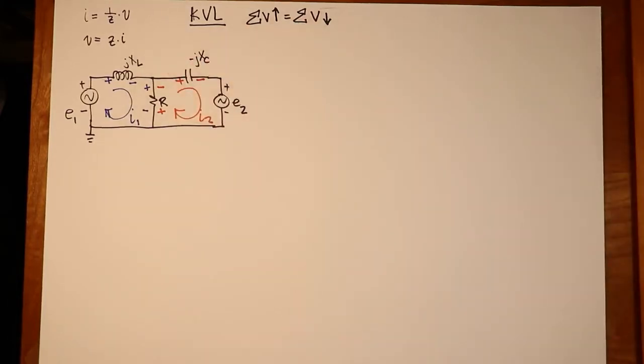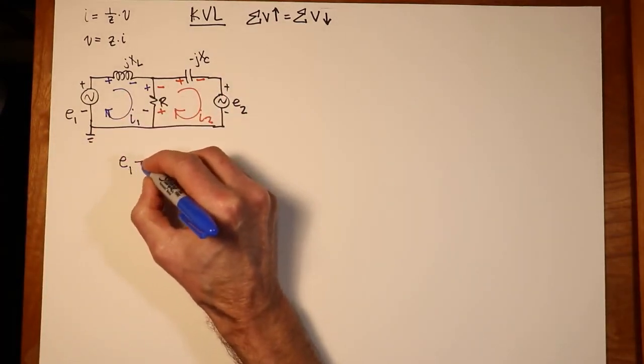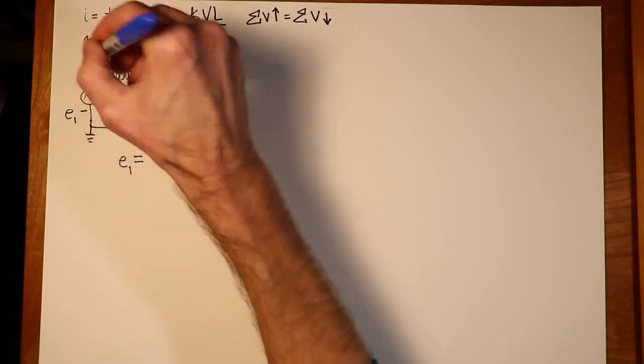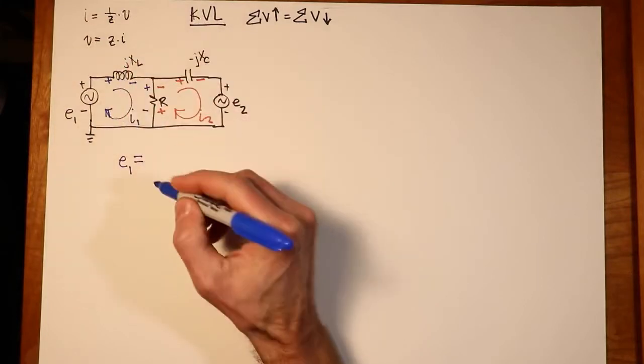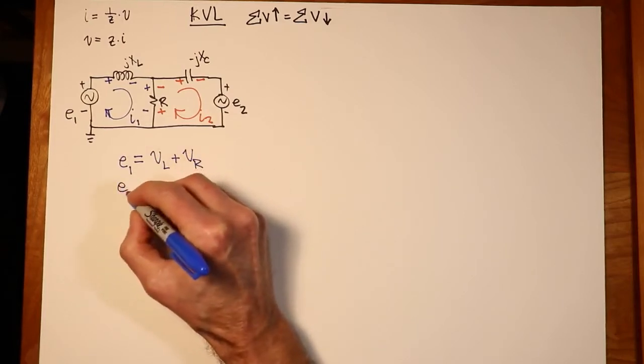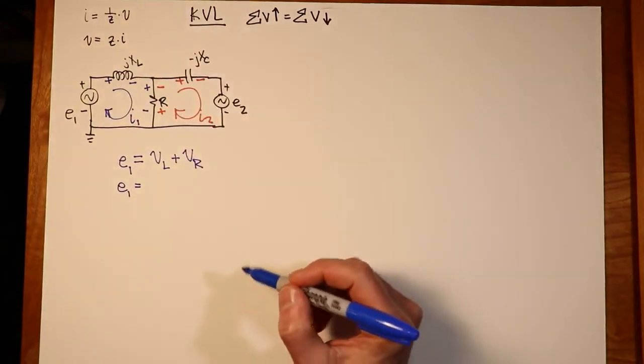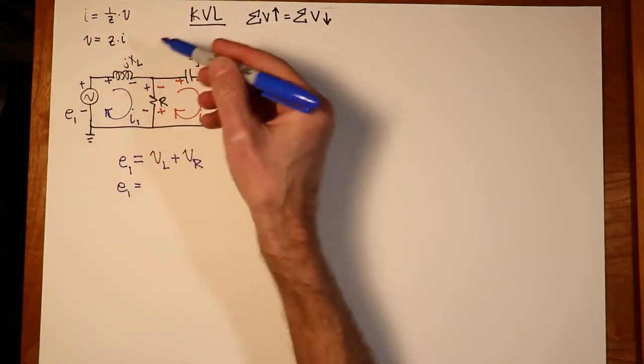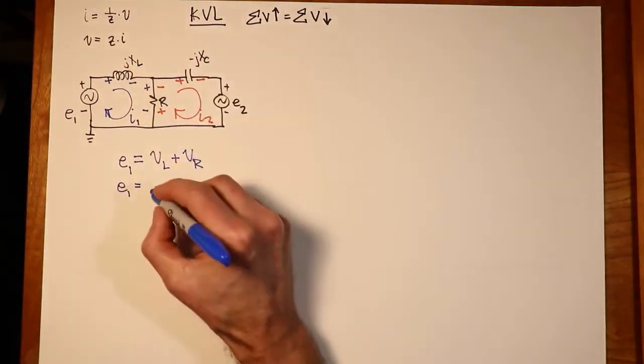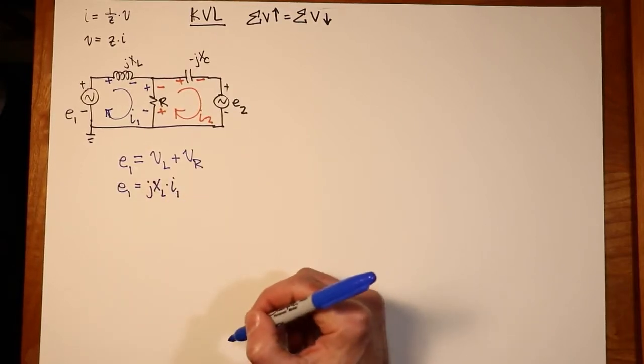So now I would go and apply KVL to each of these loops. Looking at the first loop, what we would see is that the drop created by the source E1, minus the plus, so we have two drops here, plus to minus on the inductor and the resistor. Now I want to write those in terms of their Ohm's law equivalents. What's the Ohm's law equivalent for the drop across the inductor? It's I1 times the reactance, so that's JXL times the current through it, I1.